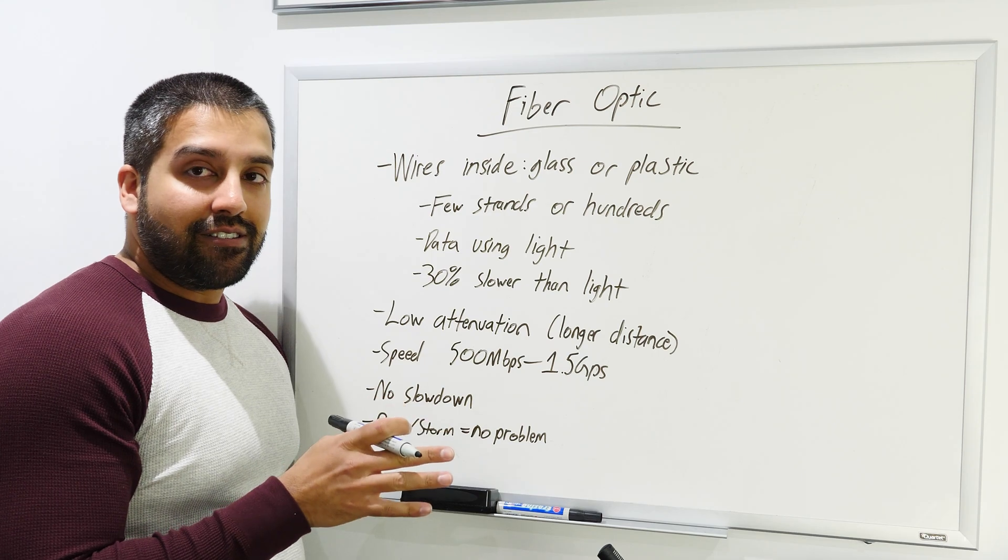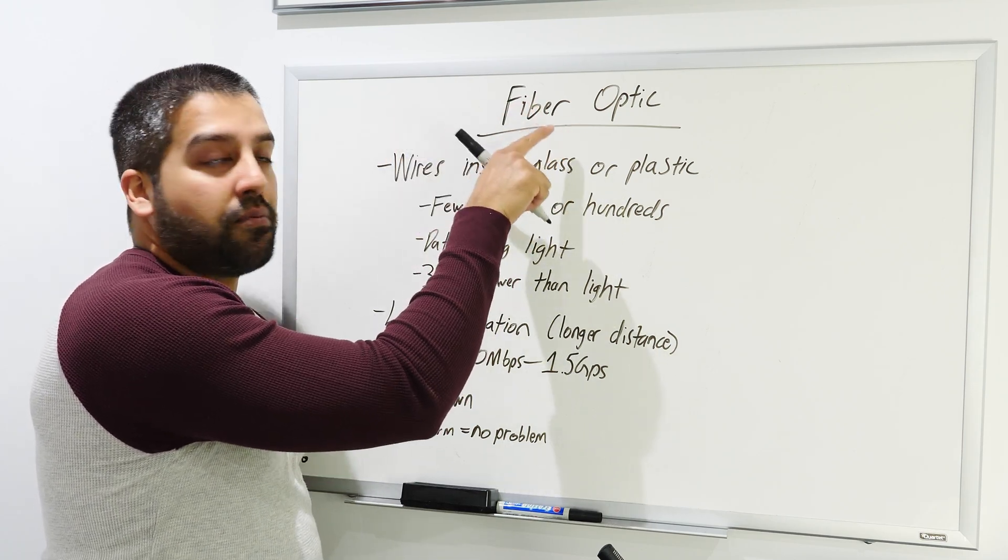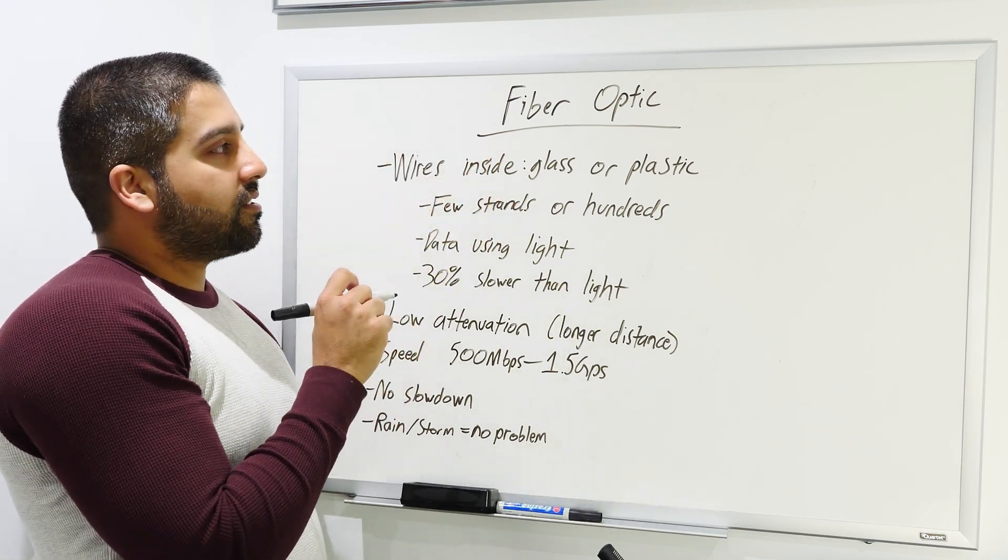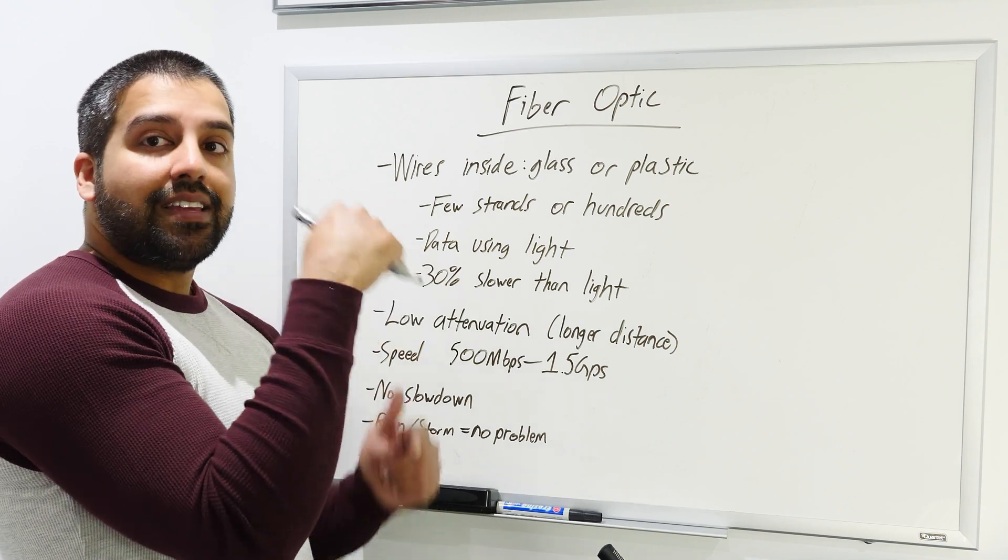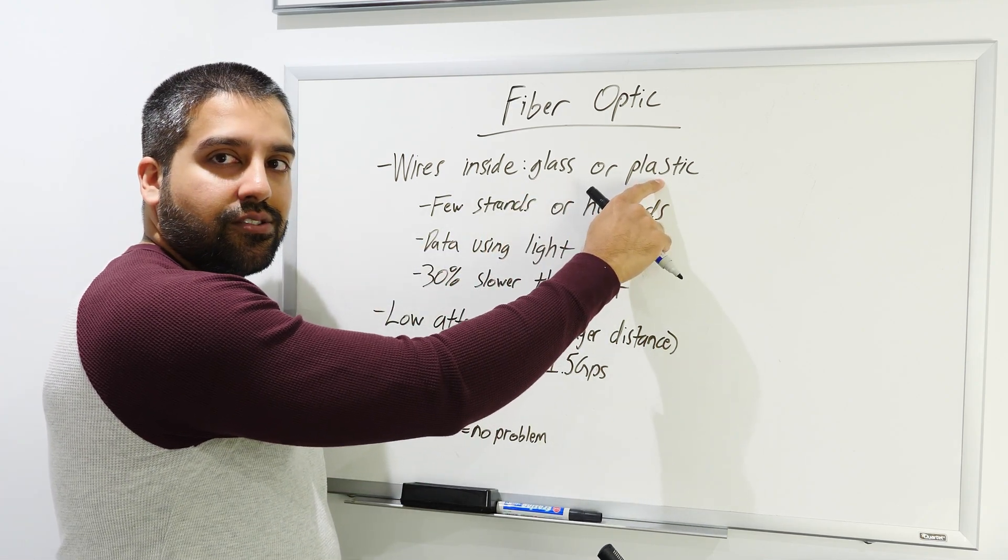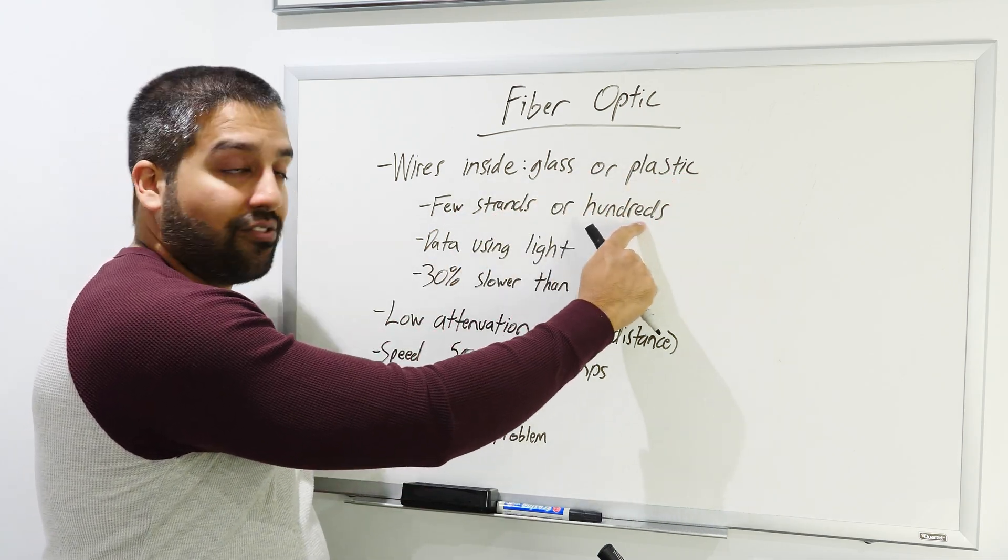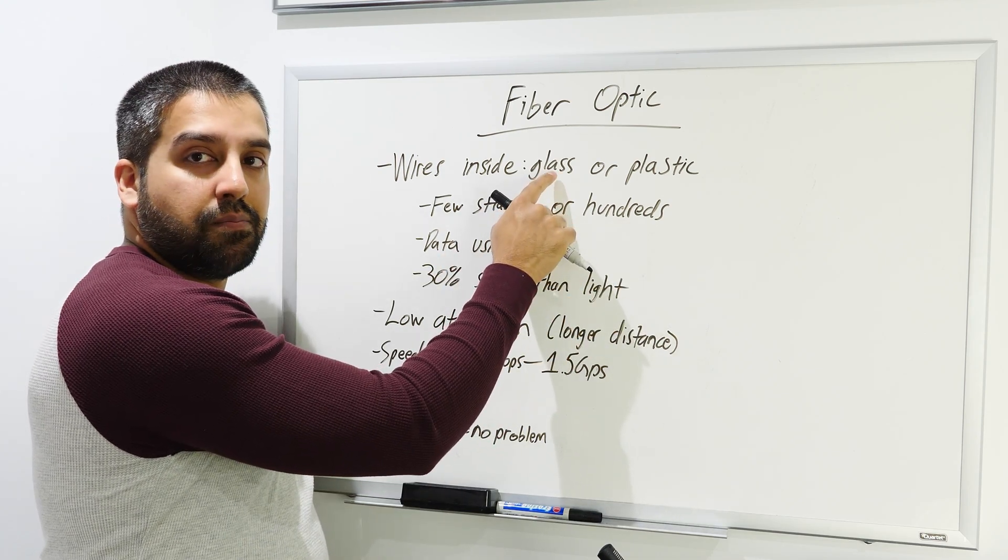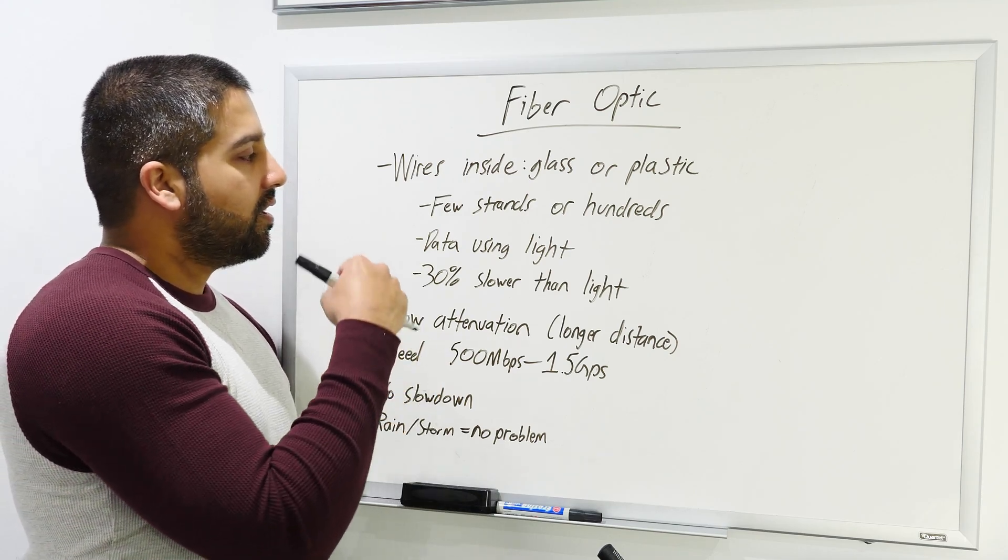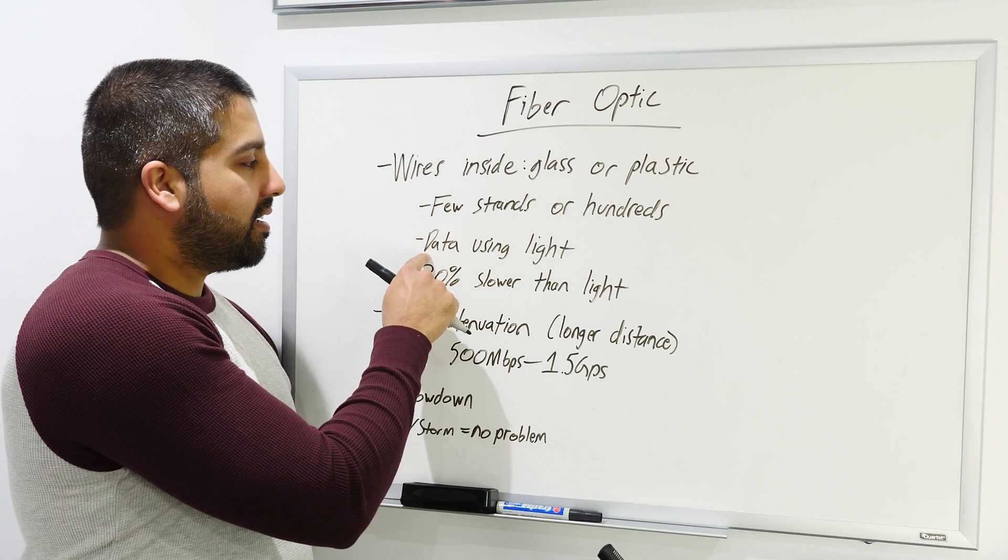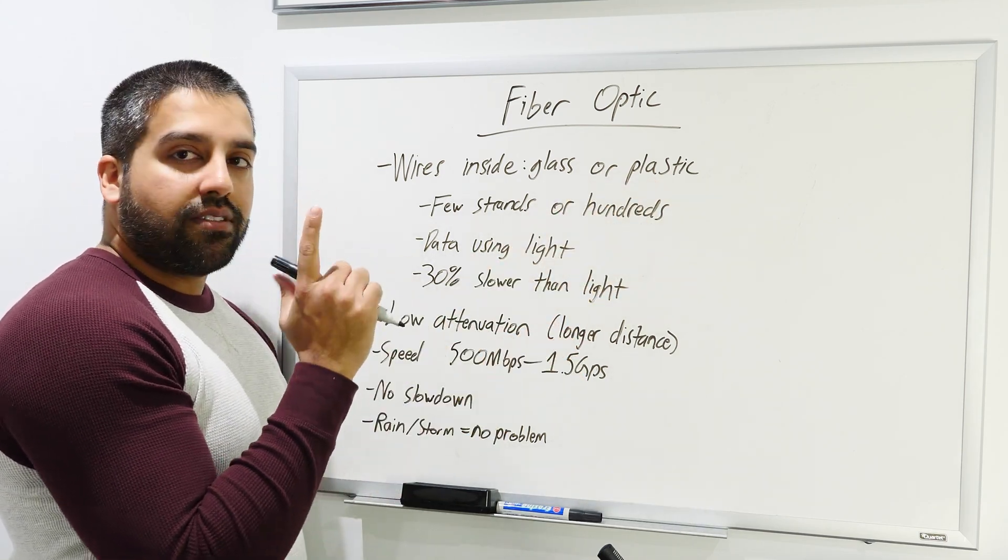The next one to go over is fiber optic. As of this video recording, this is probably the most fascinating one right now. It's very unique in this technology in the sense that the wires inside have glass or plastic. You have strands of glass and plastic. Depending on how the wire is designed, you can have a few strands or even several hundred. Those pieces of glass can even be the diameter of a hair. It's pretty insane technology. The way the data is sent over is also really interesting: data is sent using pulses of light. Light is pulsing through those glass or plastic, sending and receiving data.